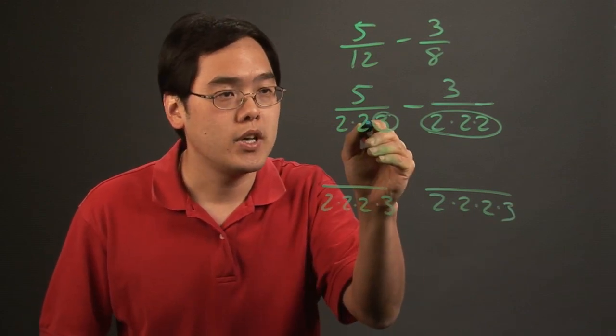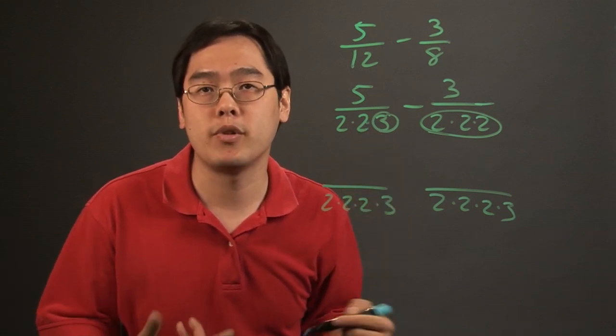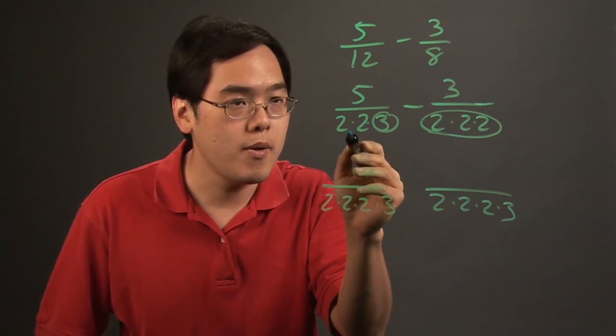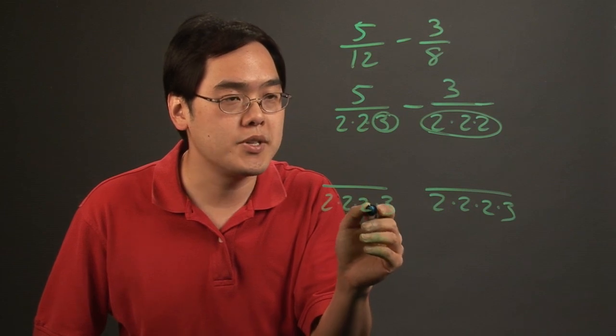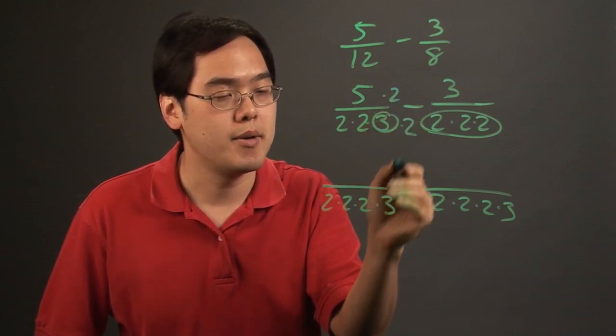When it comes to prime factorization, you can just take a look at what each denominator is missing and then multiply by what's required. As you go from here to here, it's missing one two, so you're multiplying the top and bottom by two.